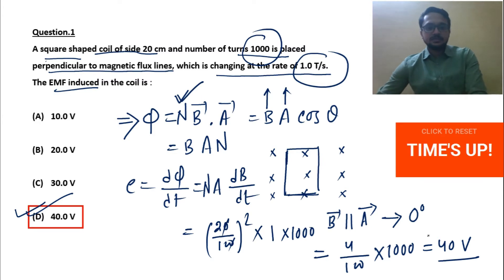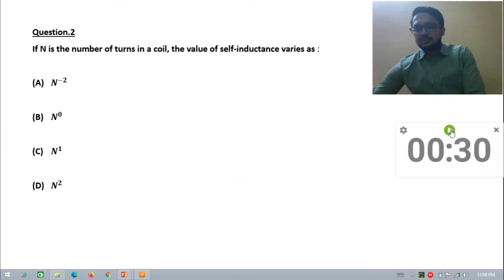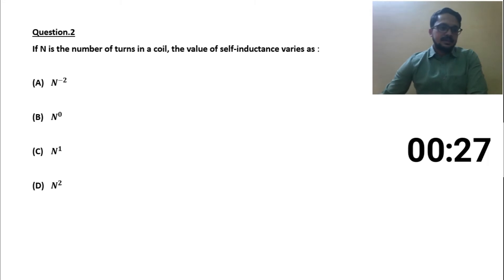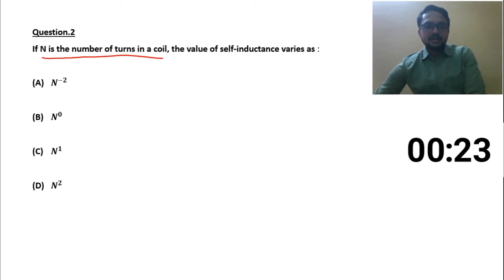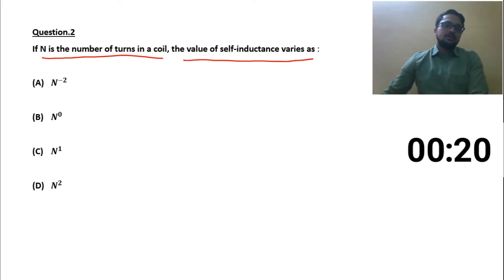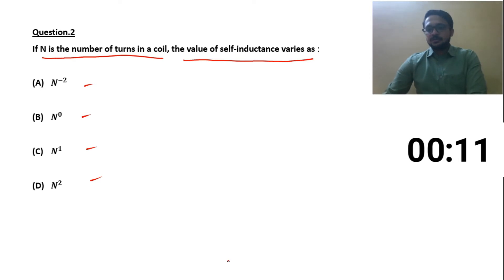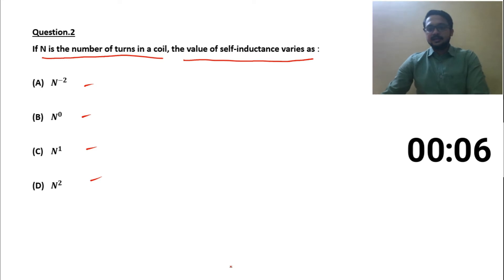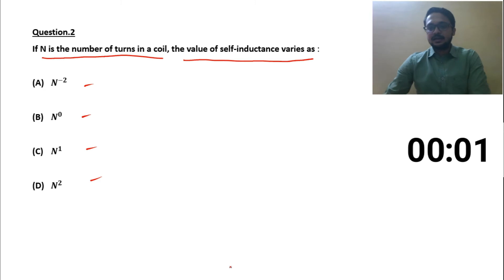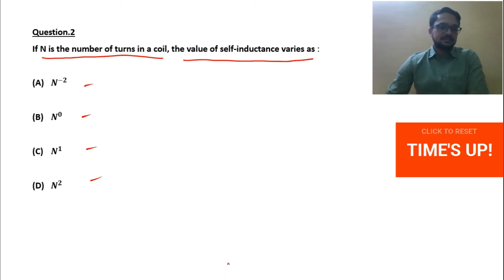Our next question — this is your second question and your timer has started. If N is the number of turns in a coil, the value of self-inductance varies as: option A — N to the power minus 2, option B — N to the power 0, option C — N to the power 1, option D — N squared. Time is ending and time is finished.